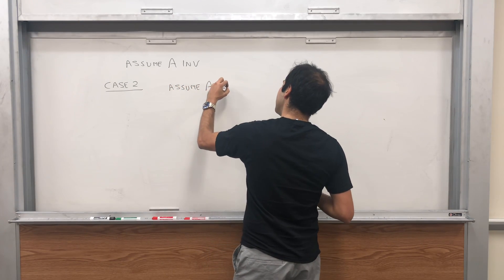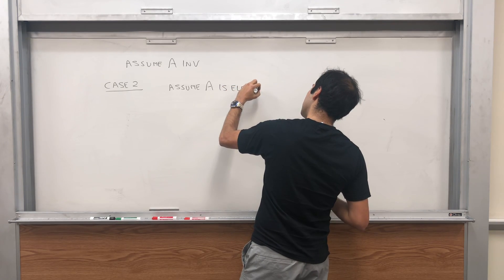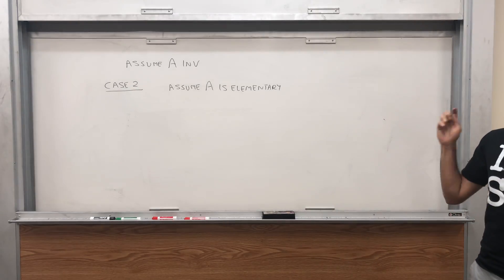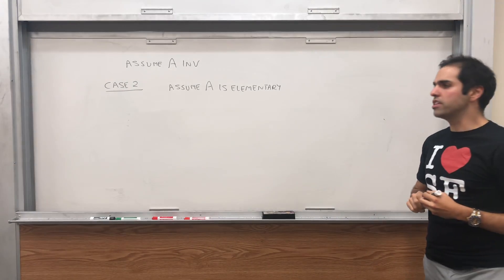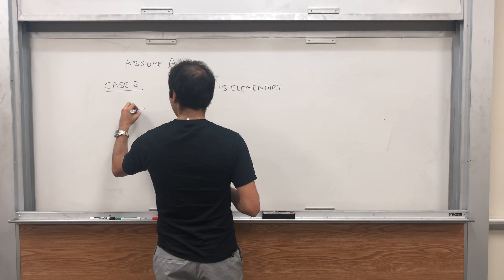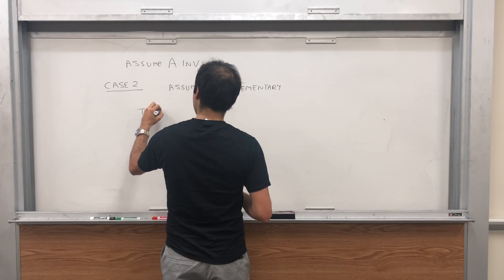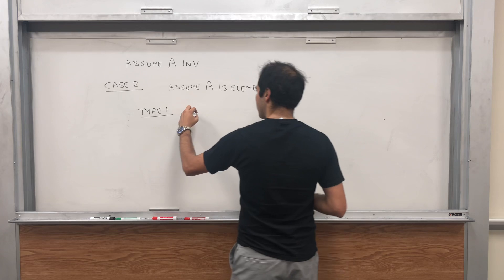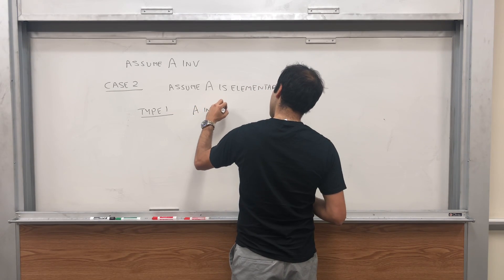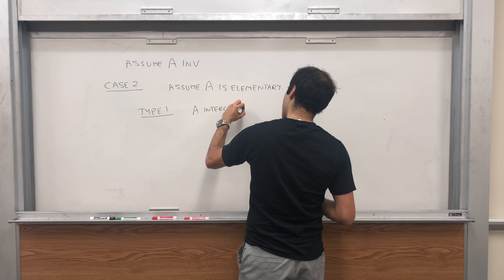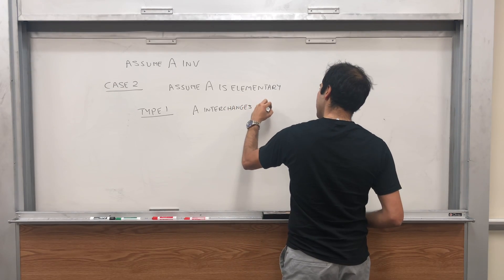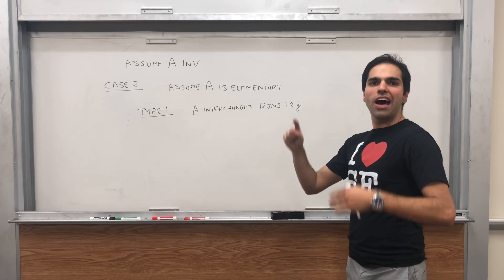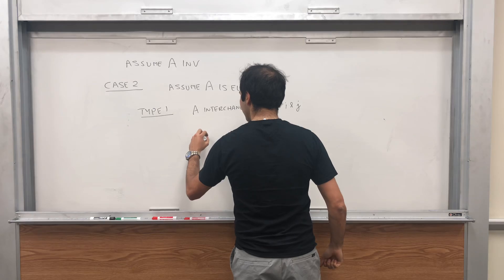Assume A is an elementary matrix. I want to show that in each case, we have determinant of A equals determinant of A transpose. First, assume A is of type 1, which means A interchanges two rows — rows i and j. It looks like the identity matrix, but rows i and j are interchanged. Let me give you an example.